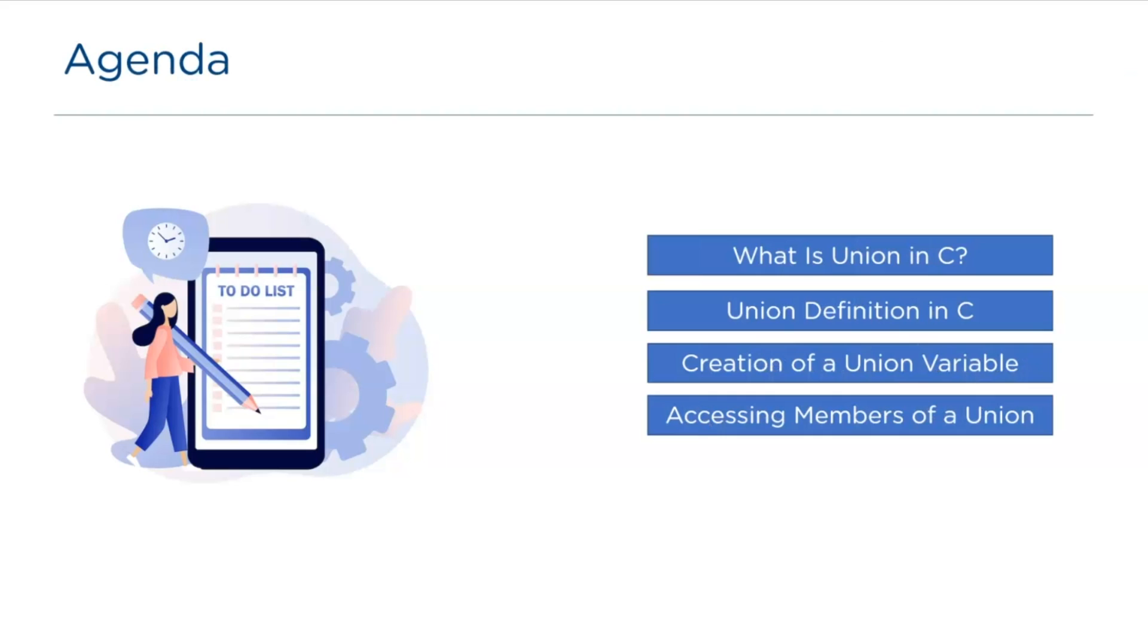This session will help you understand what unions is in C. Then, let's understand the union definition in C. After that, let's see how to create a union variable. Later on, how to access members of a union.